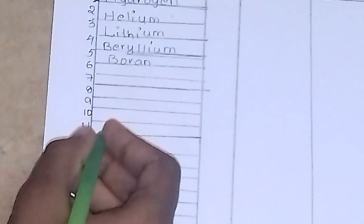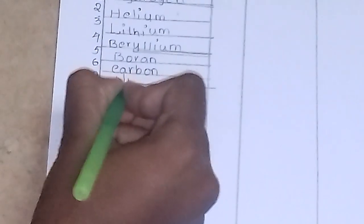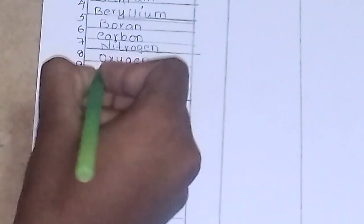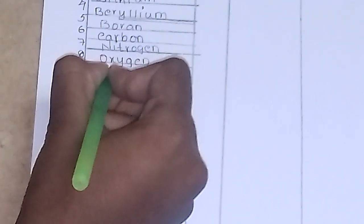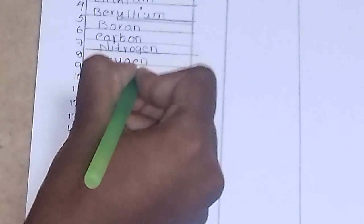The sixth one is carbon. The seventh one is nitrogen. The eighth one is oxygen. The ninth one is fluorine. The tenth one is neon.